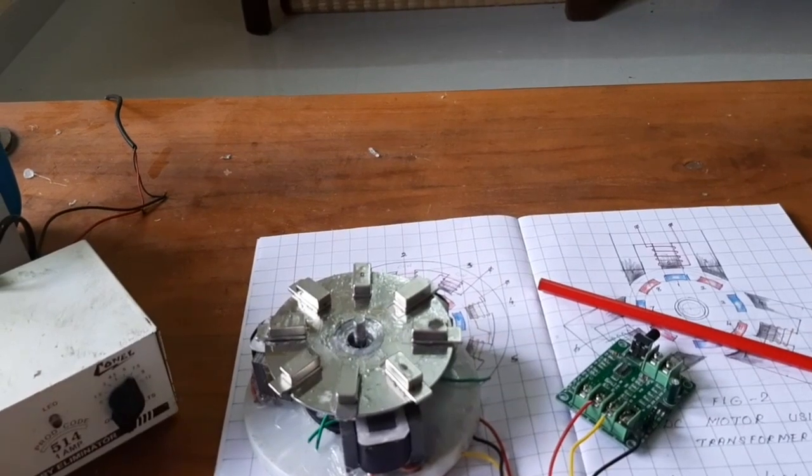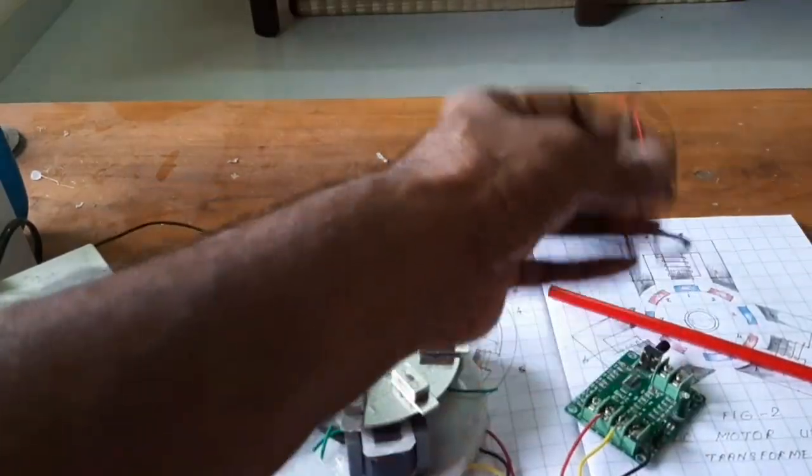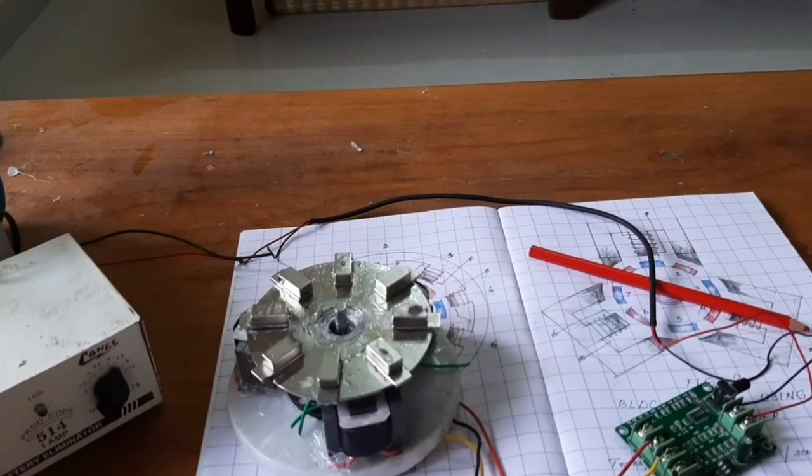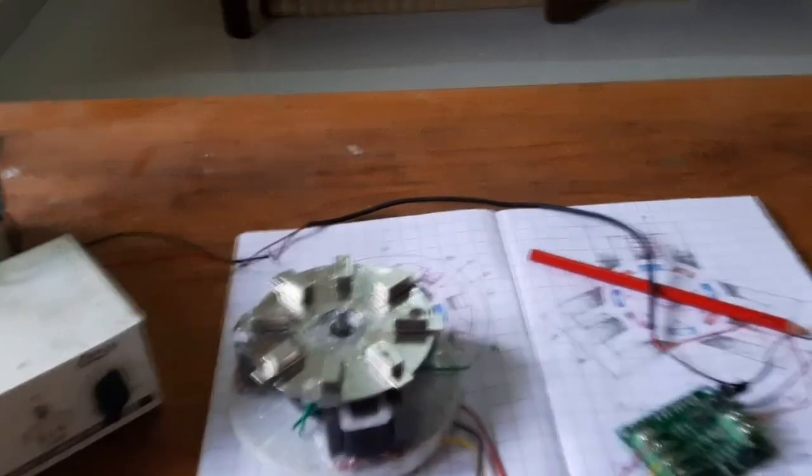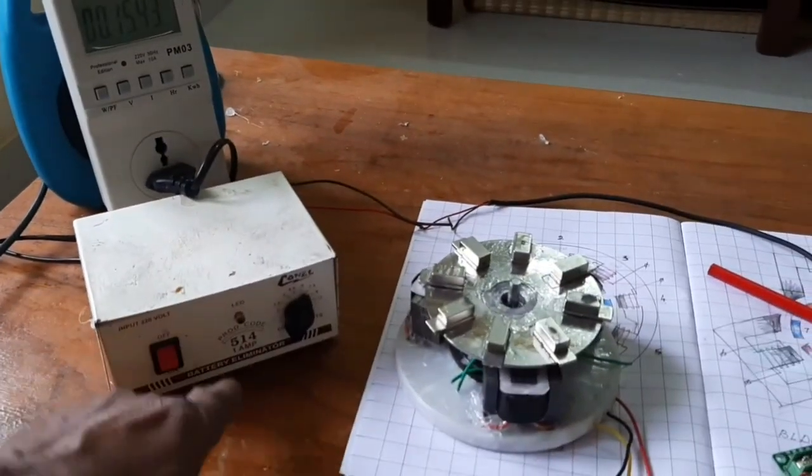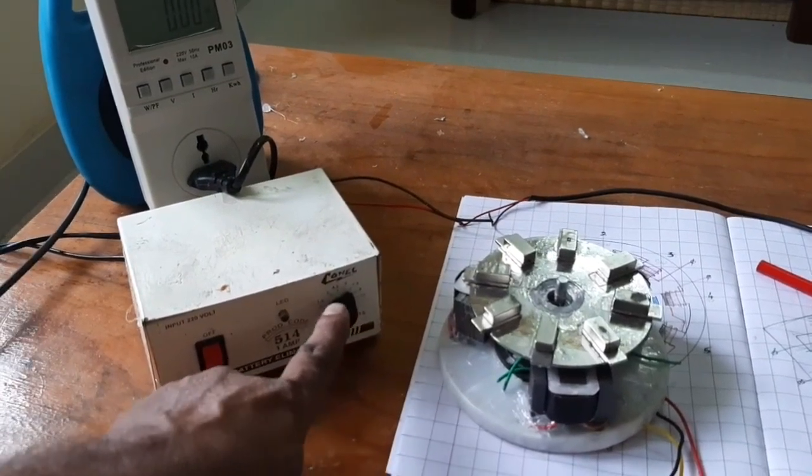I'm going to connect the source voltage. The source voltage is connected here and the DC source is 7.5 volts. Here is the power meter.